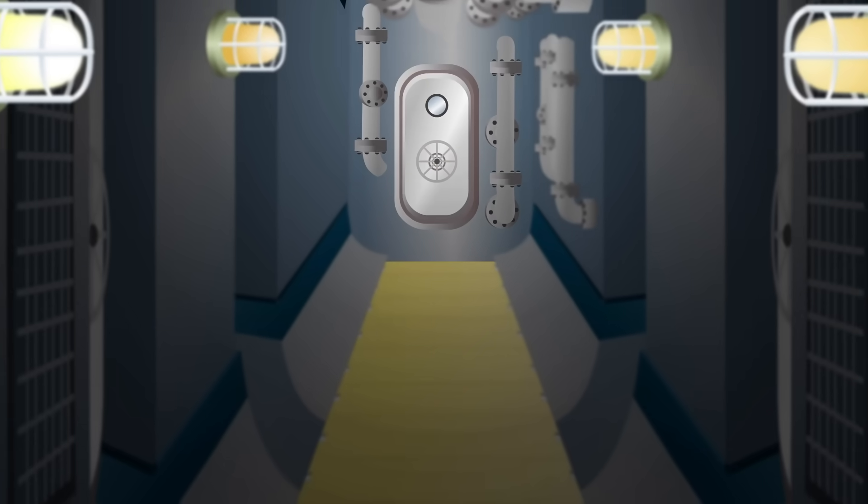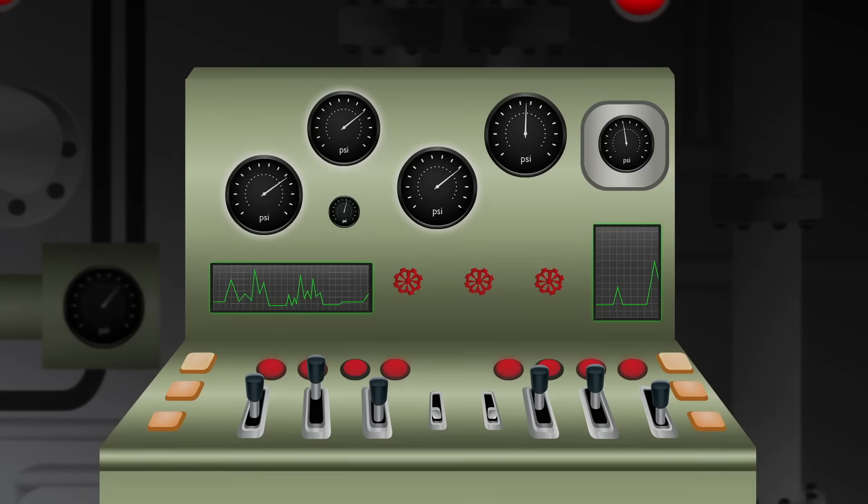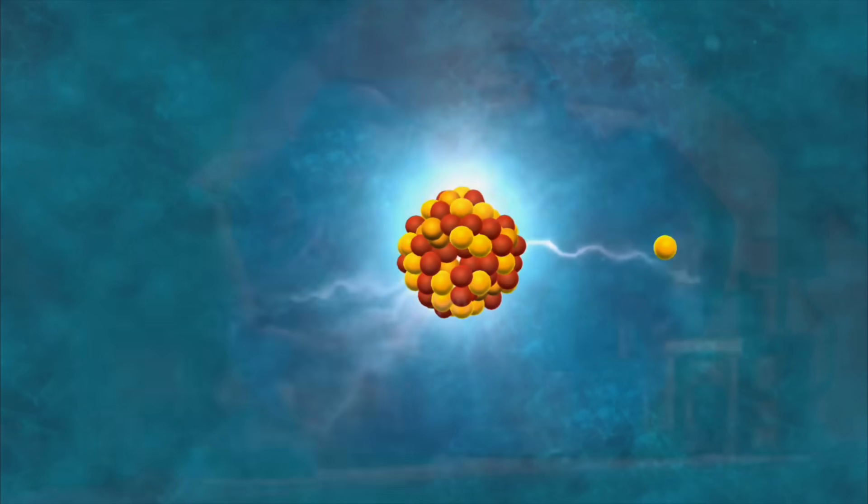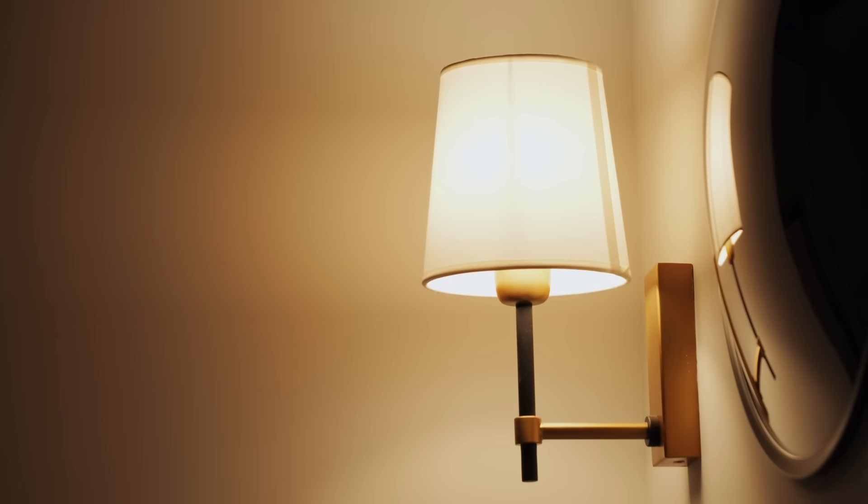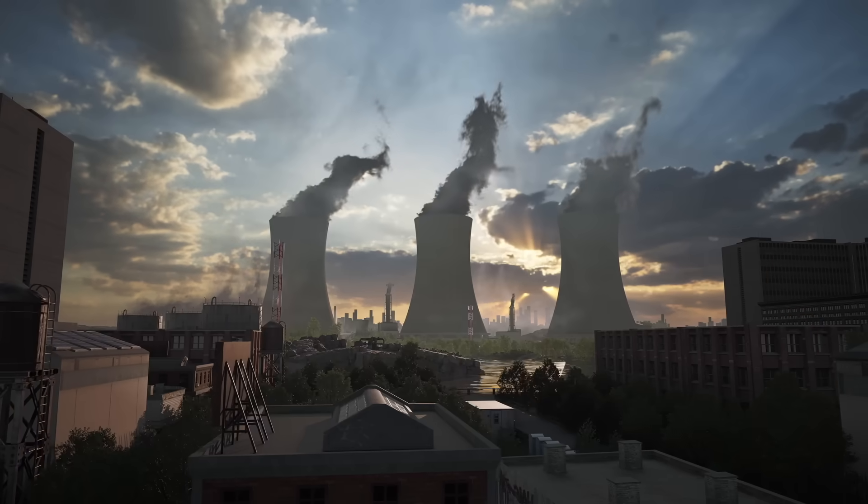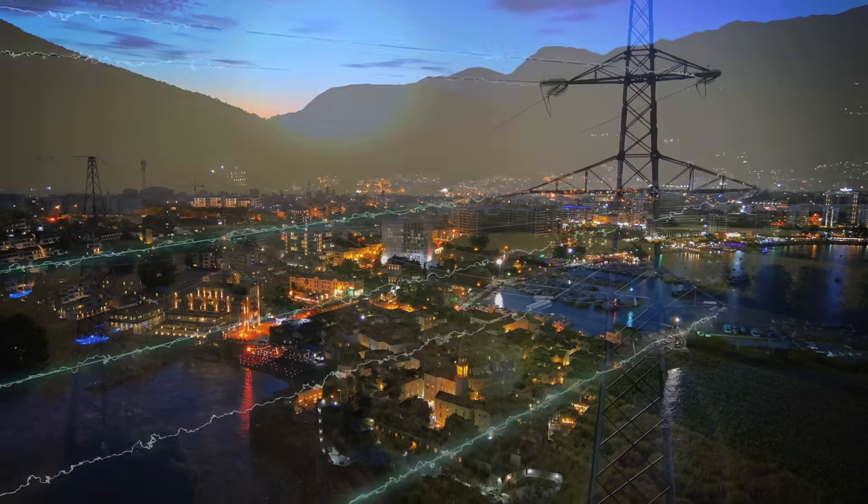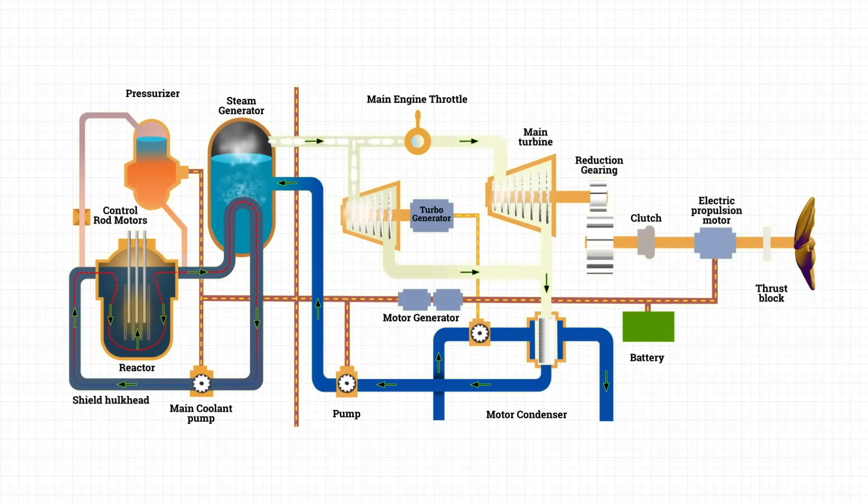It hums beneath your feet. No louder than a refrigerator. And yet, this machine powers everything. In the early days of atomic research, scientists discovered that splitting the atom releases a huge amount of energy. That energy could be turned into electricity. And for more than 70 years, nuclear power plants have been using it to power homes, cities, and industries around the world. Similarly, each nuclear submarine draws power from its own miniature onboard nuclear reactor.